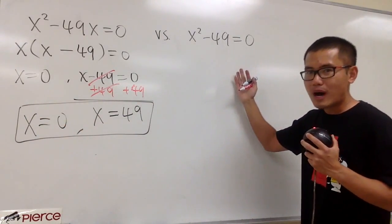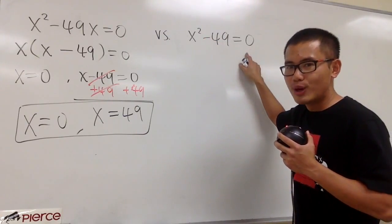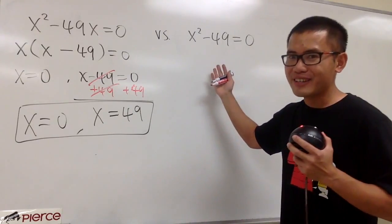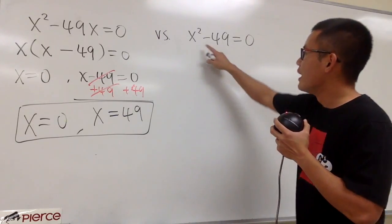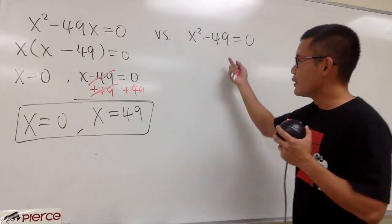How about this one? We have x squared minus 49 is equal to 0. Here we have two terms. And yes, you can also do this by factoring. But the factoring, it will be a difference of two squares. Let me show you real quick.